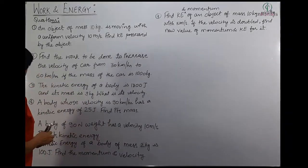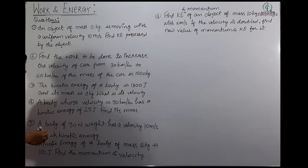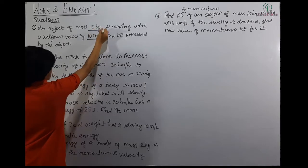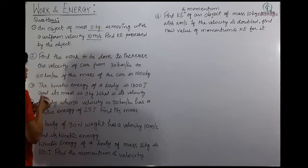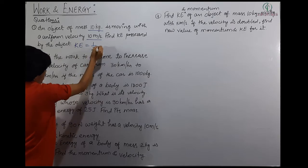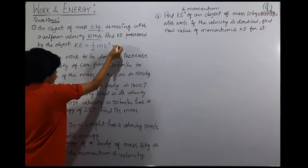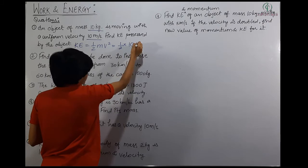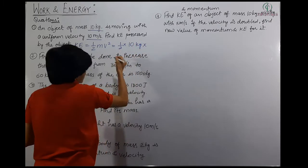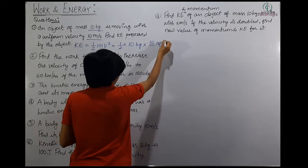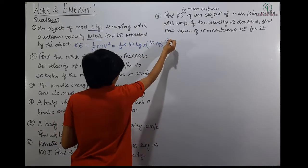First question: an object of mass 10 kg is moving with a uniform velocity of 10 meter per second. Mass is directly given and velocity is given. Kinetic energy is half mv². So half into mass — which is 10 kg — and velocity is 10 meter per second.